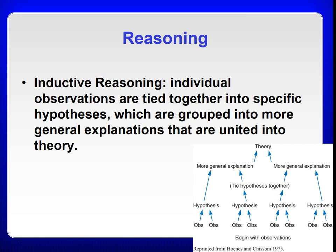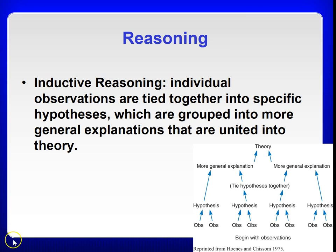With inductive reasoning, individual observations are tied together into specific hypotheses, which are grouped into more general explanations that are united into theory. In this type of reasoning, we move from the level of observations to that of theory, which requires many individual studies that test specific hypotheses. We begin with observations, then offer theoretical explanation.